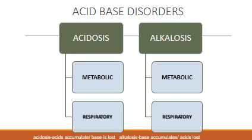The two main acid-base balance disorders are acidosis, which is of two types — metabolic and respiratory — and alkalosis, which is also of two types — metabolic and respiratory. Acidosis means there will be accumulation of acids and base is lost, while alkalosis means that the base accumulates and the acids are lost.